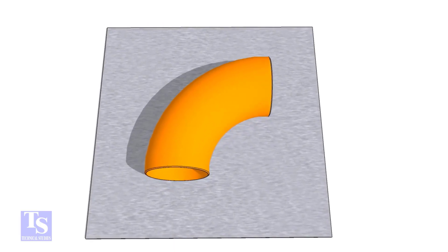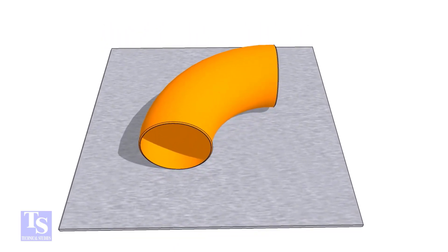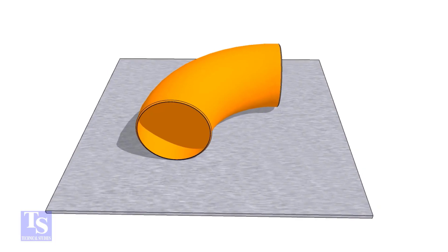First of all, choose a leveled plate and put the elbow on it. Check the outer diameter of the elbow.